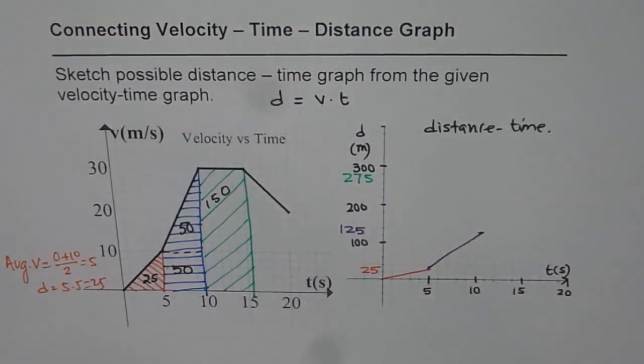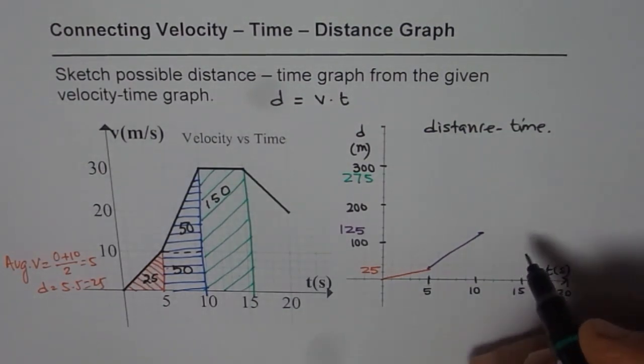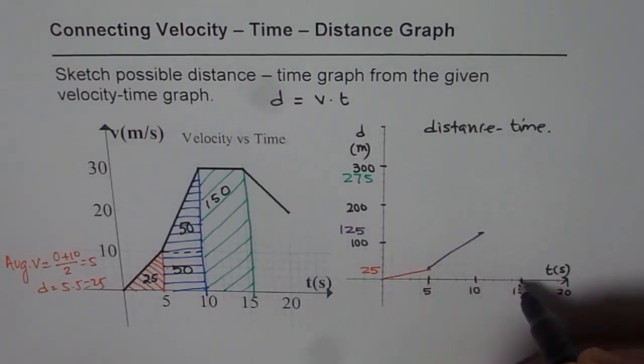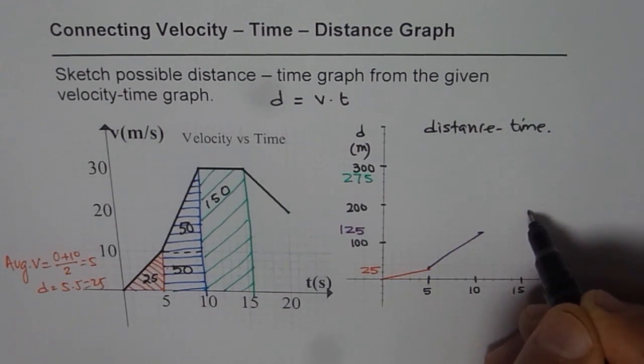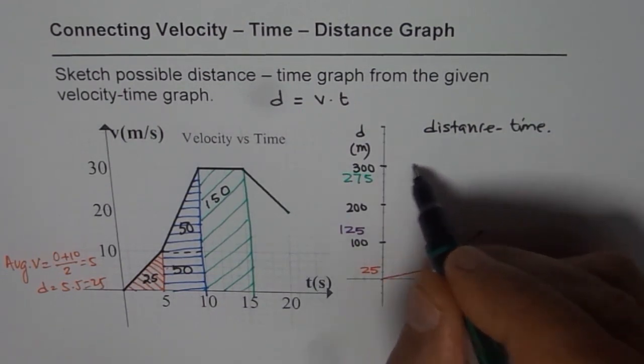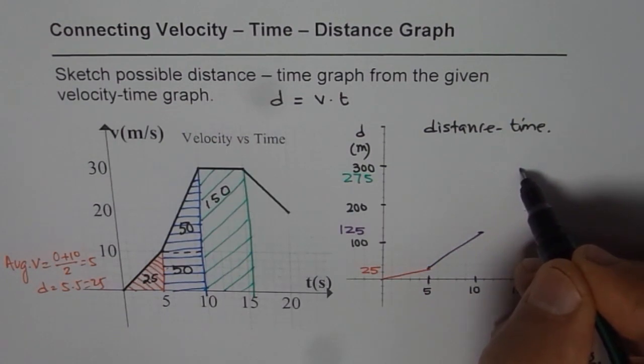So we land at 275. Let me write 275 as the next phase. This is at 15. So we are going here. 275 is 25 less than 300, so that should be approximately 275.